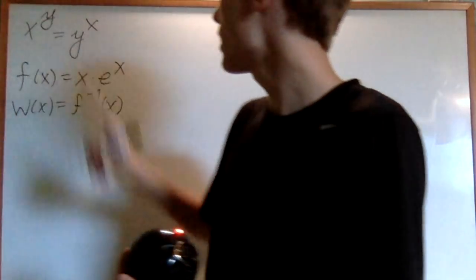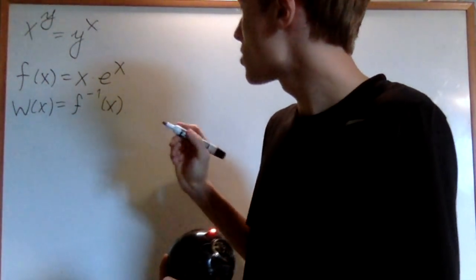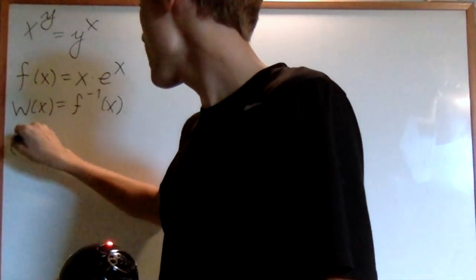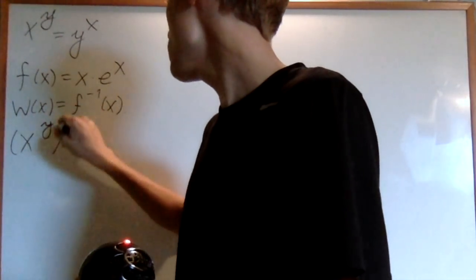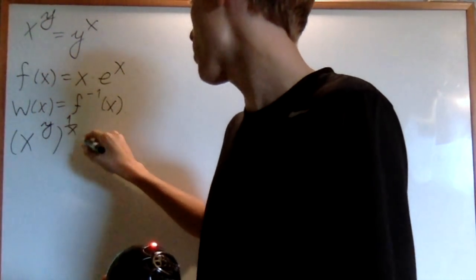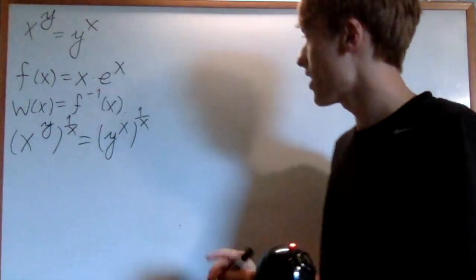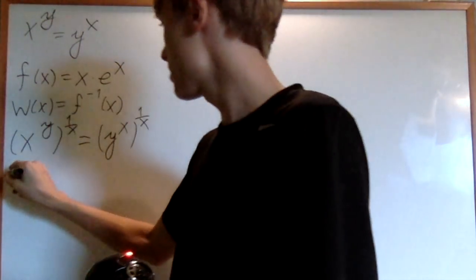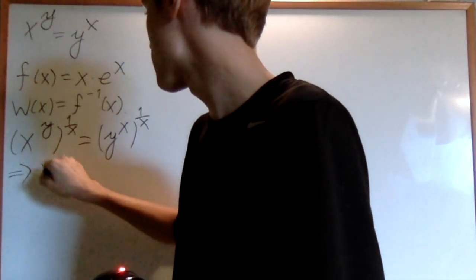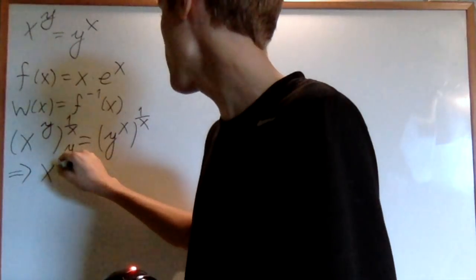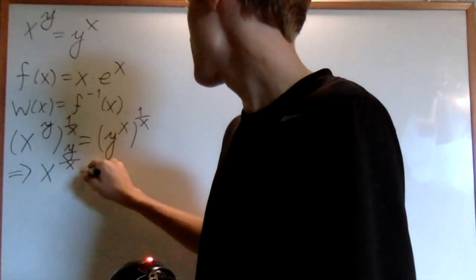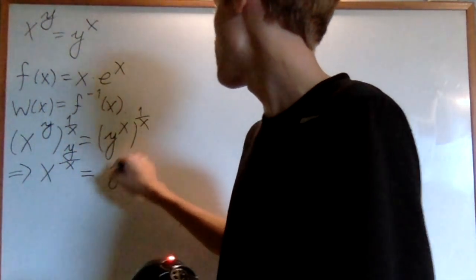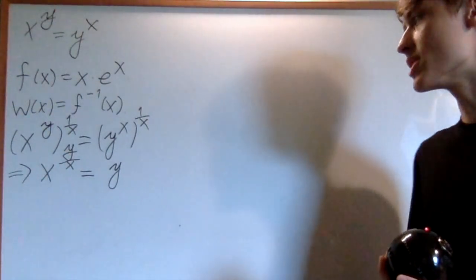Well then, how could I do that? Well, the best way to do that is just to raise both sides to the 1 over x power. Because if I do that, I get x to the y over x is equal to y. Now I only have y on this side.